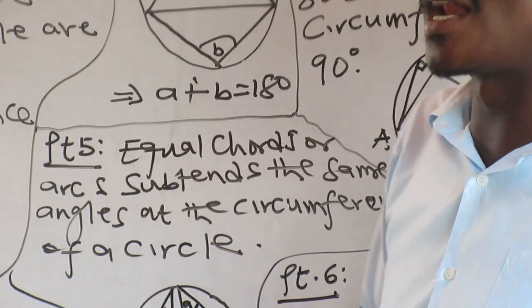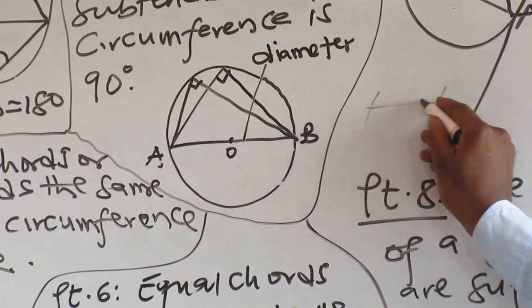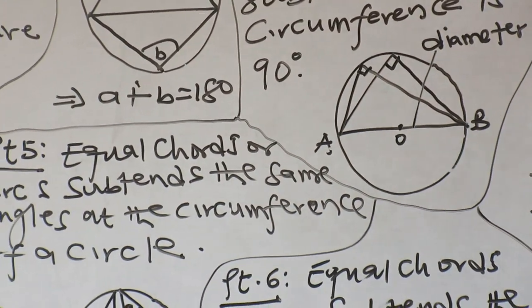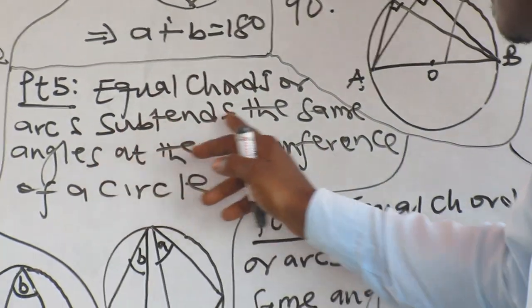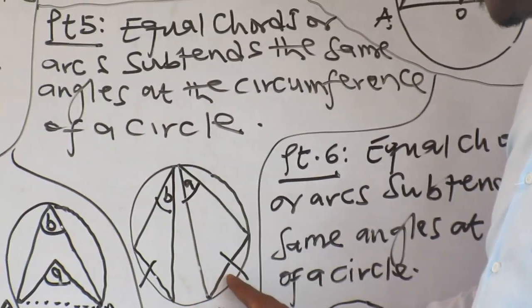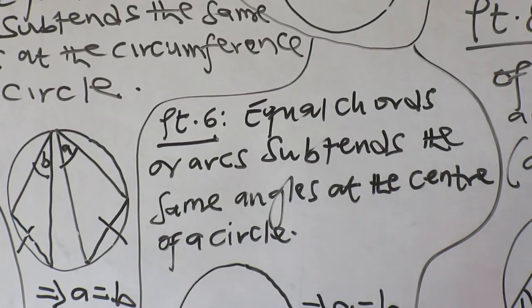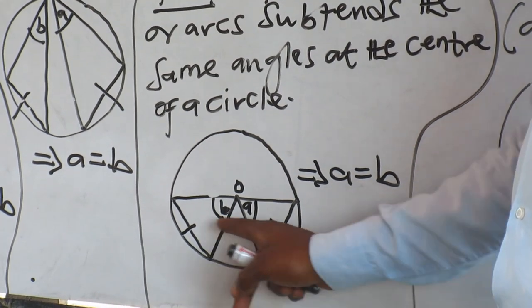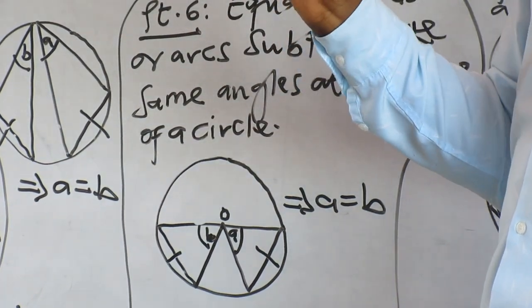Properties five and six involve equal chords or arcs. A chord is a line; an arc is the curved part between the endpoints. Property five: equal chords or arcs subtend equal angles at the circumference — A equals B. Property six: equal chords or arcs subtend equal angles at the center of a circle.